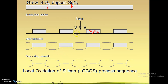Between active areas you do not want any current to flow — no leakage. We implant boron into the semiconductor, which makes the p-type substrate more p, meaning the doping increases in that region. When doping increases, it becomes difficult for current to flow from one active area to another. If there is a parasitic MOSFET in this region, we are effectively increasing its threshold voltage.